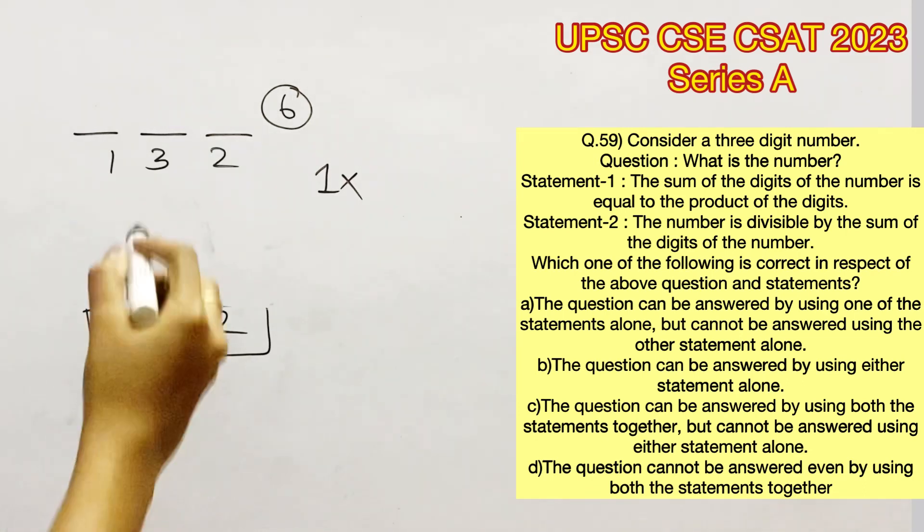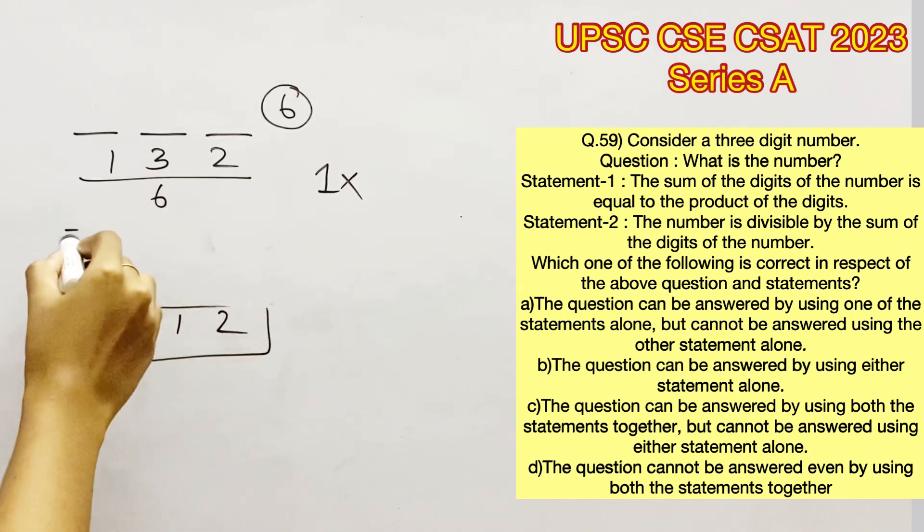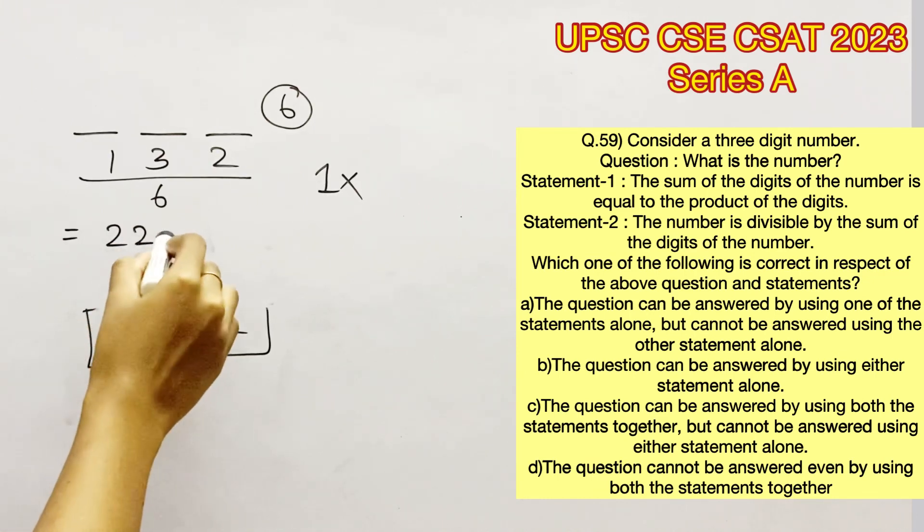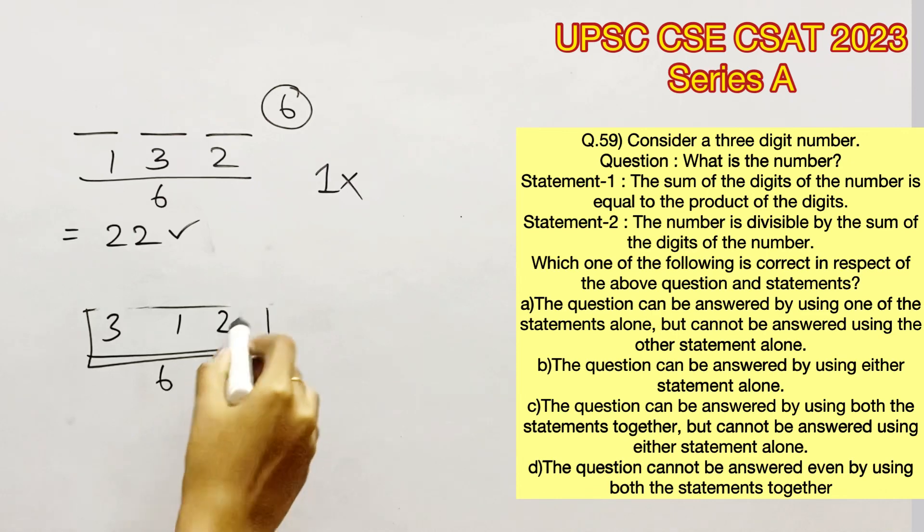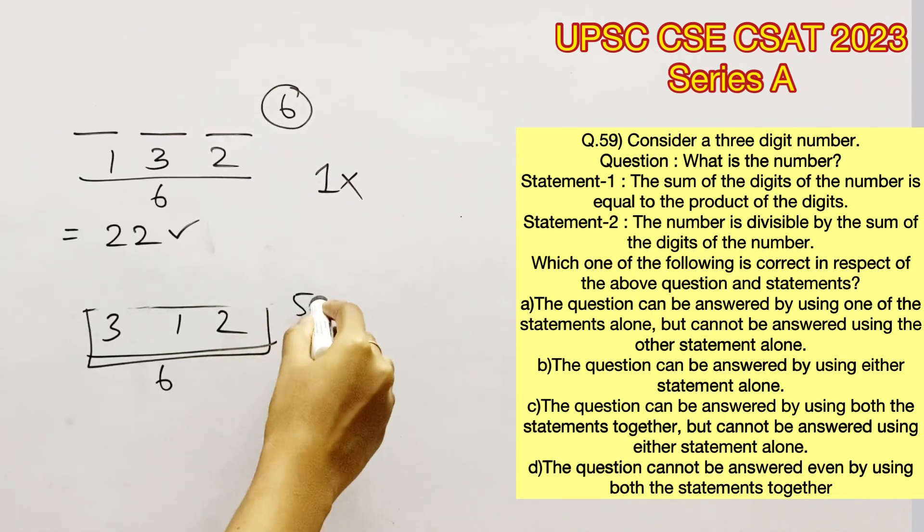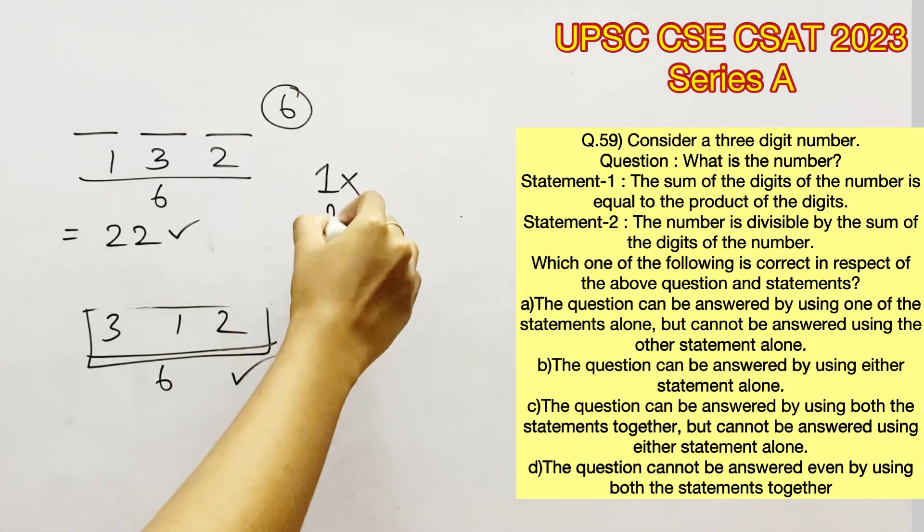The only two even numbers in our case are 132 and 312. Dividing 132 by 6 we get 22, therefore 132 is a multiple of 6. Dividing 312 by 6 we get 52, therefore 312 is also a multiple of 6.